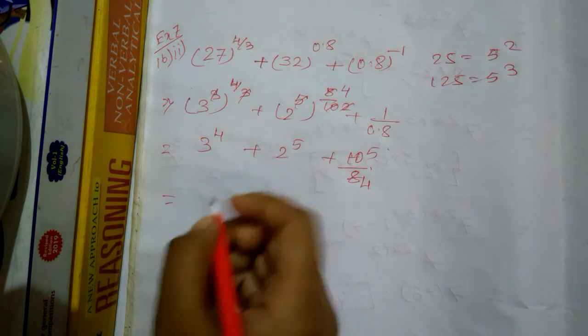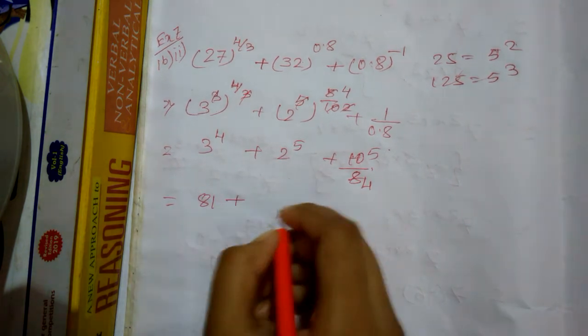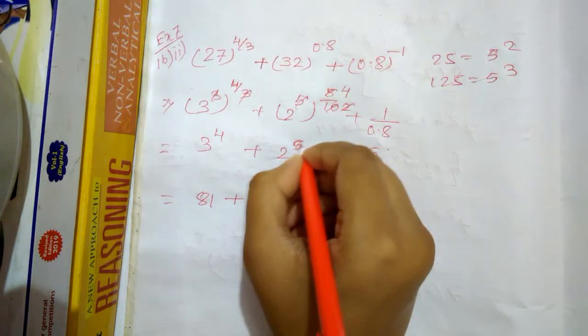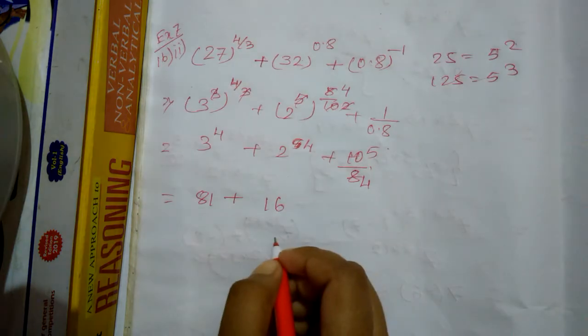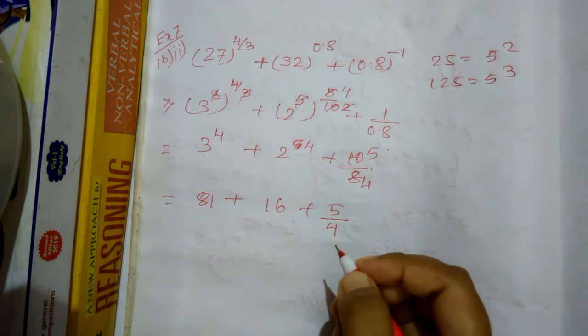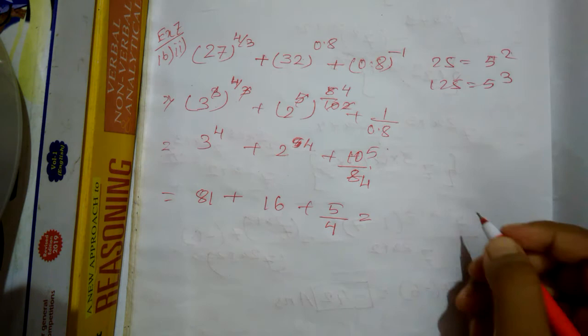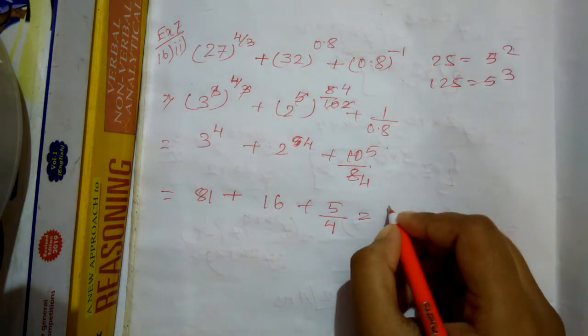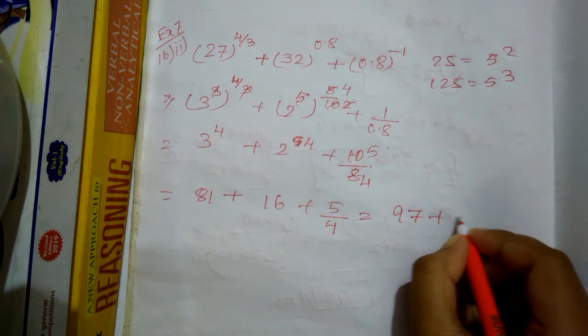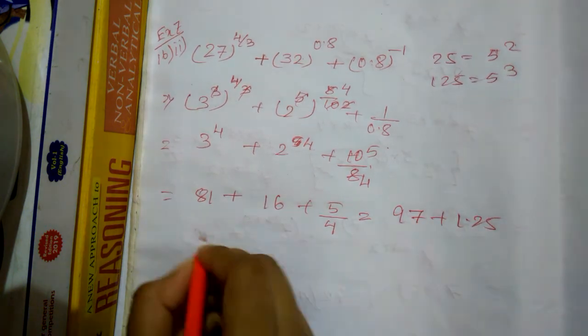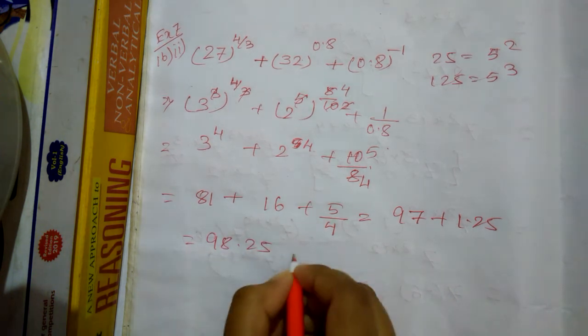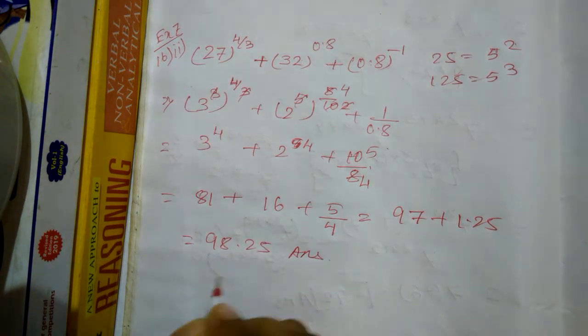Now 3 to the power 4 equals 81, and 2 to the power 4 equals 16. And we are left with 97 plus 1.25, which is 98.25. This is the required answer.